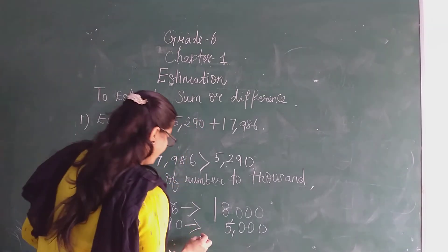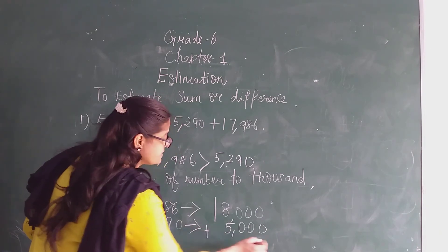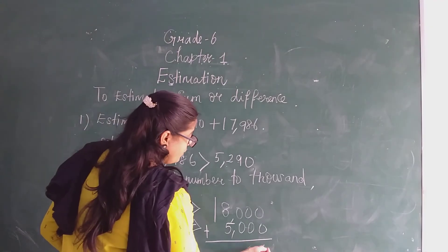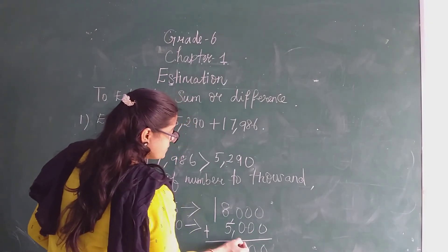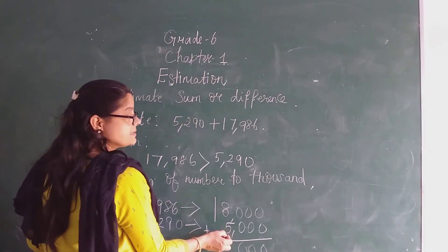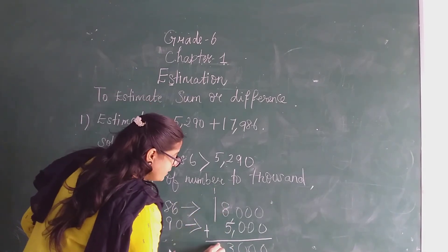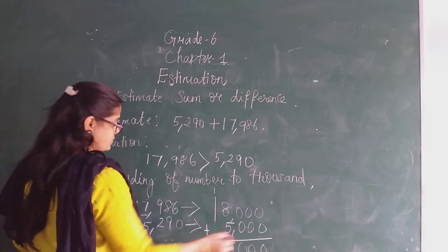Now we will add. 0, 0, 0, 0. 5 plus 8 is 13, so 1 plus 1 is 2. 23,000 is there.